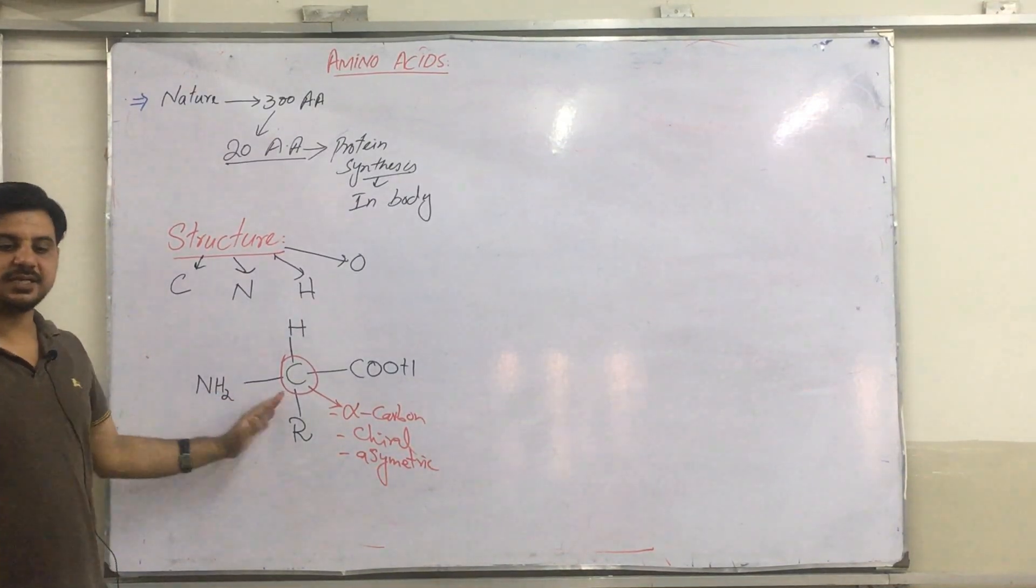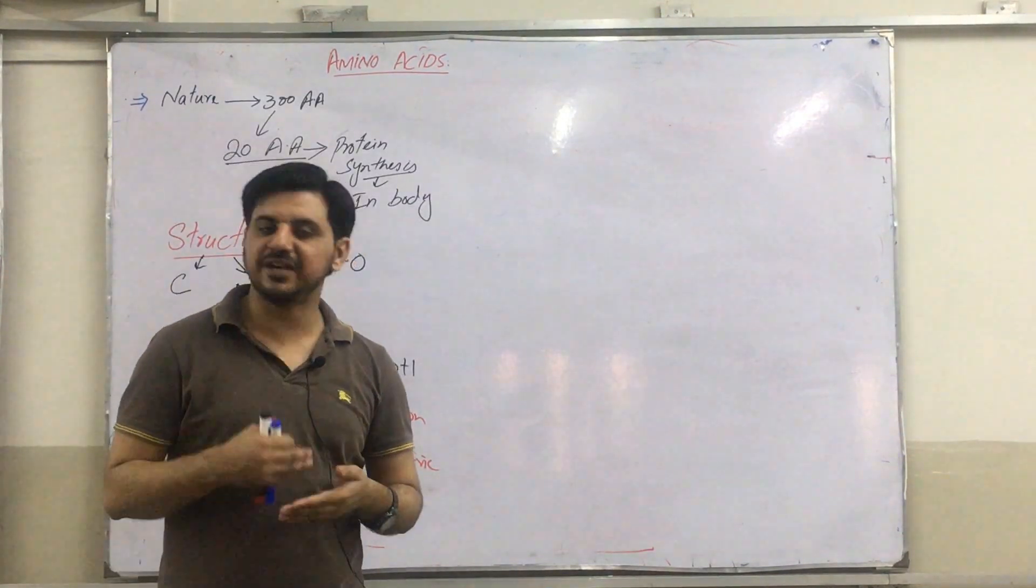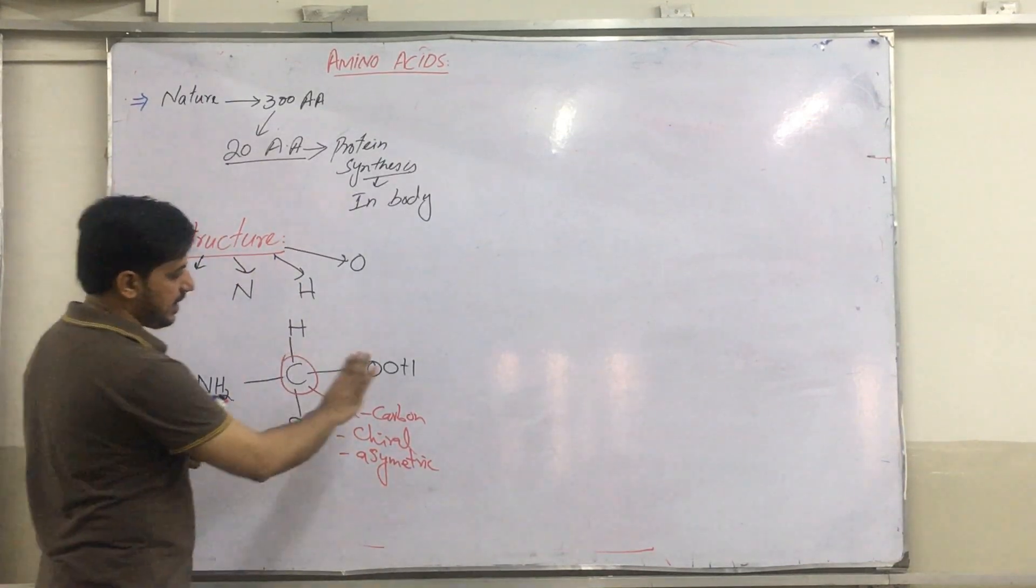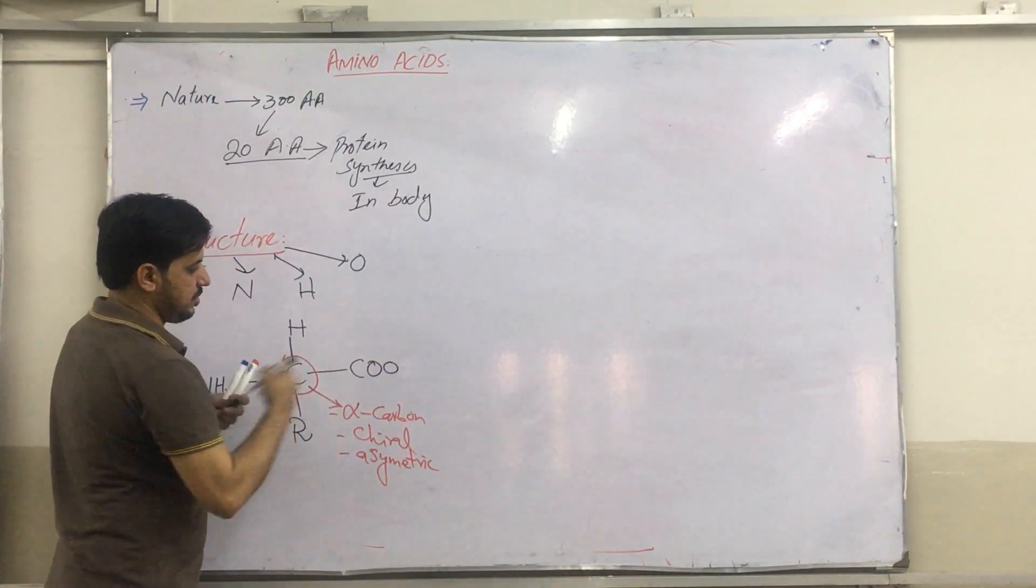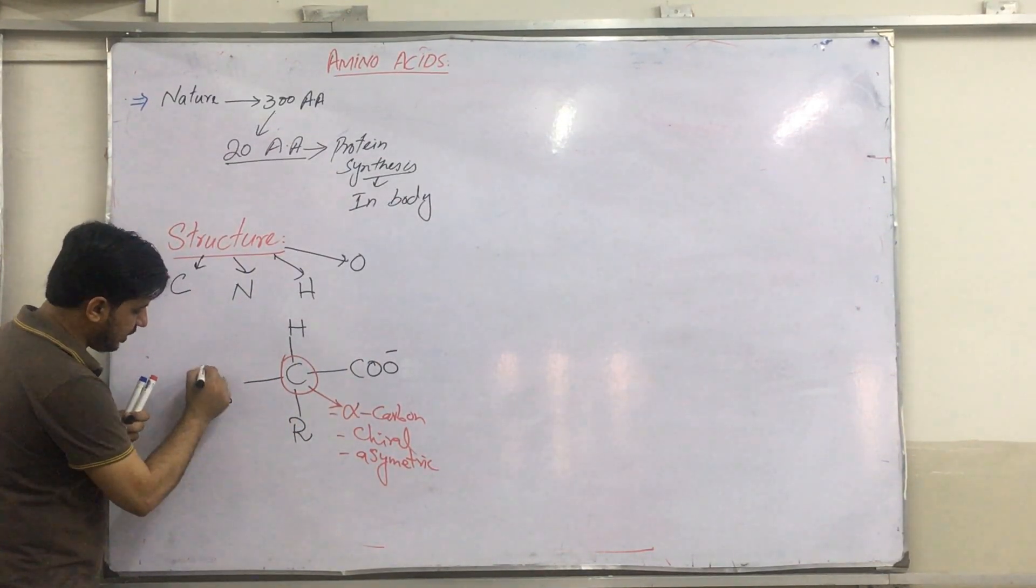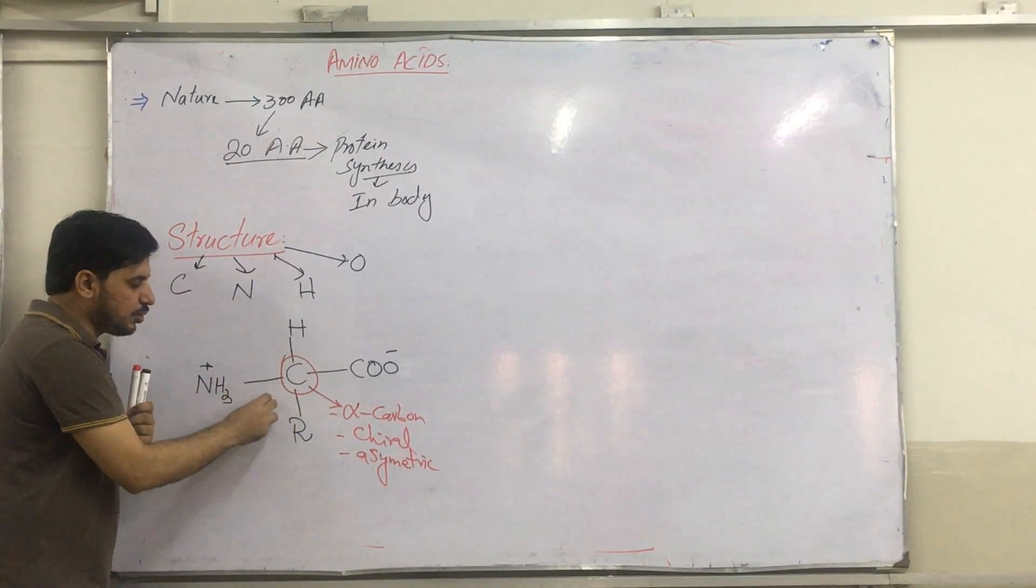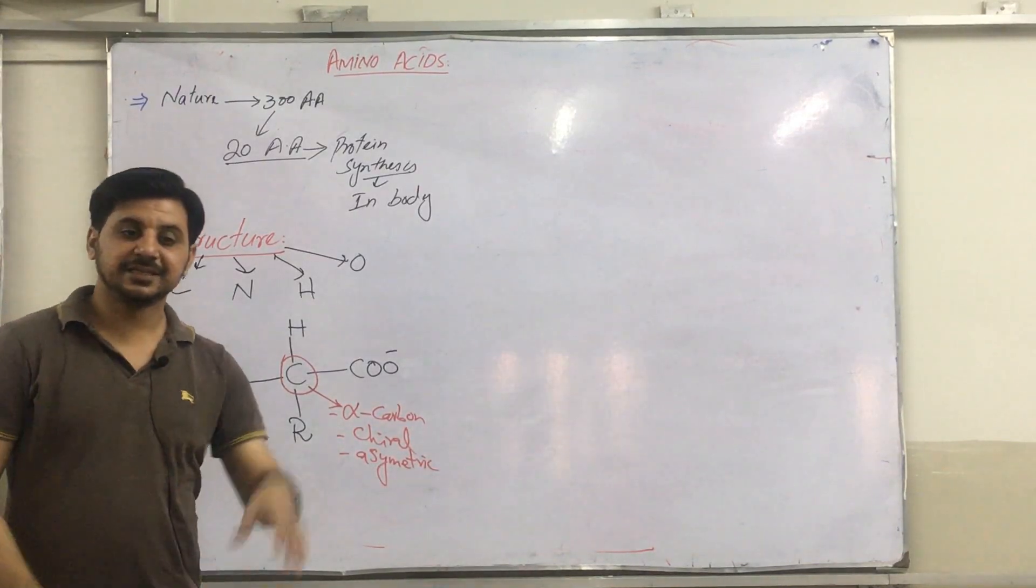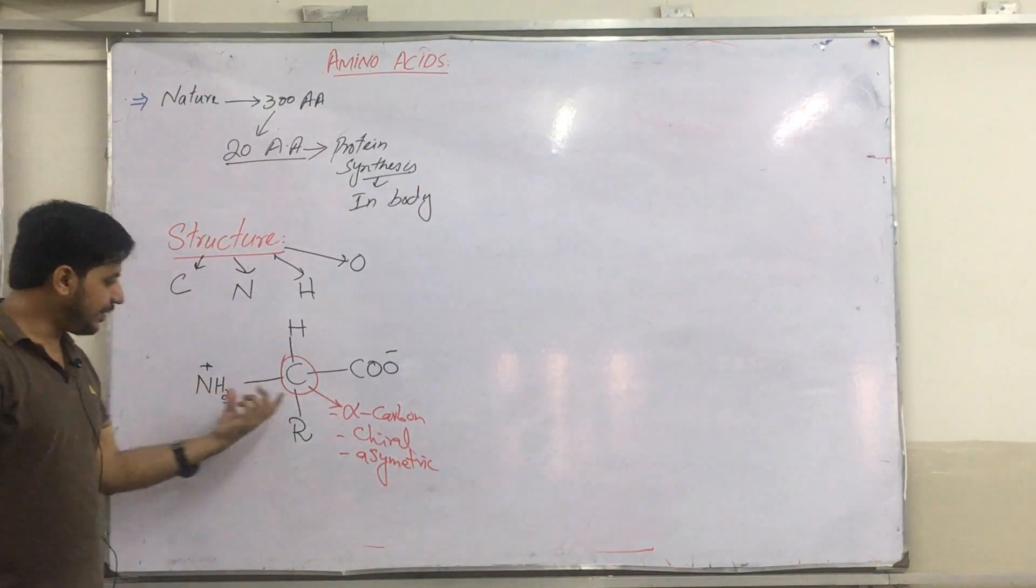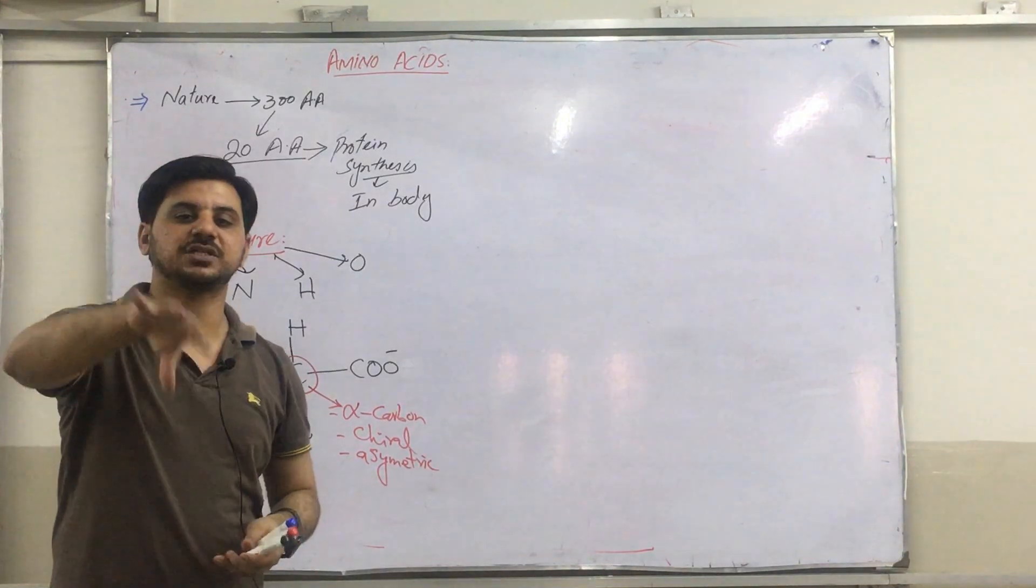This amino acid can ionize itself and exist like this: COO negative and NH3 positive. Whenever amino acid exists in this form, this is called zwitterion, and the physiological pH at which this amino acid exists as a zwitterion is referred to as isoelectric point.